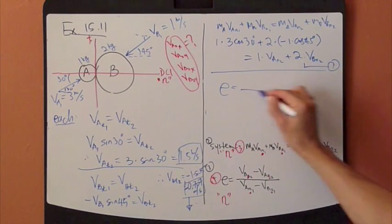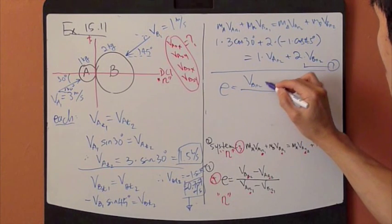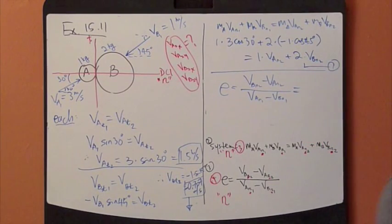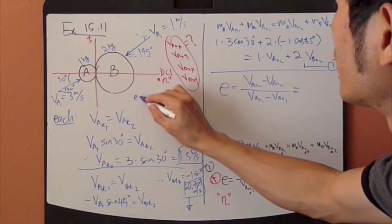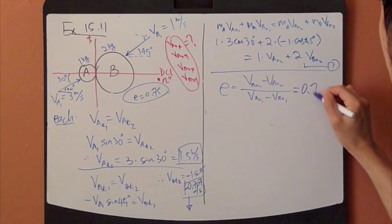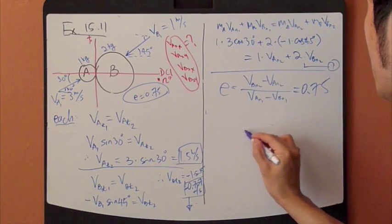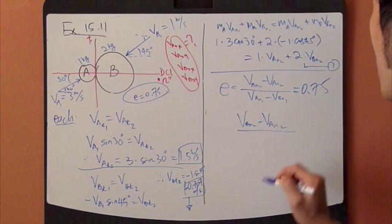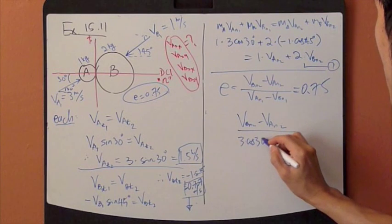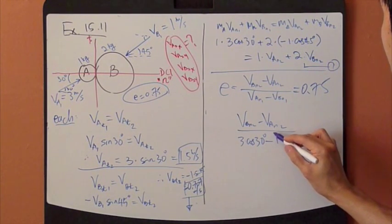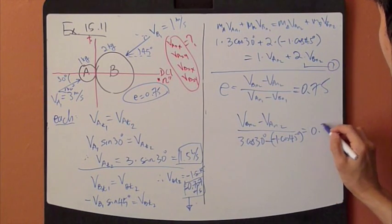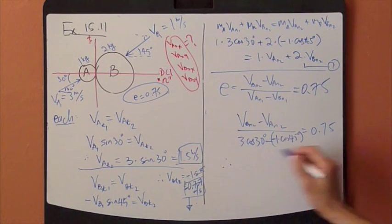Now, as far as the last equation here: VBN2 minus VAN2 equals e times VAN1 minus VBN1. This is given in the problem — e is given as 0.75. So let's plug it in: VBN2 minus VAN2 equals 0.75 times VAN1 which is 3 cos 30, minus VBN1 which is negative 1 cos 45, equals 0.75. That's equation 2.